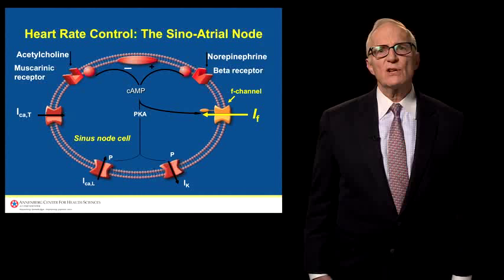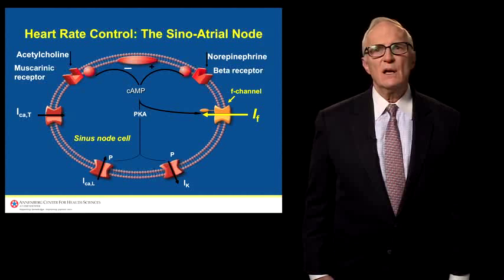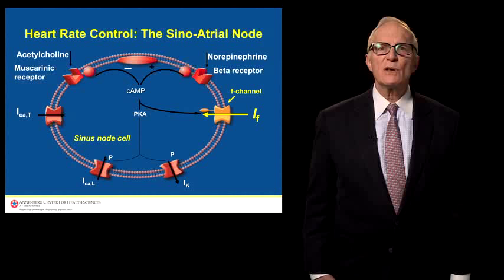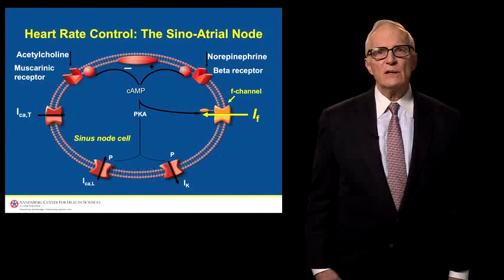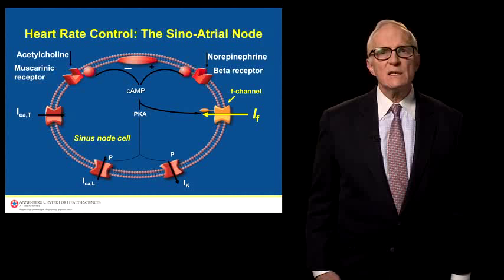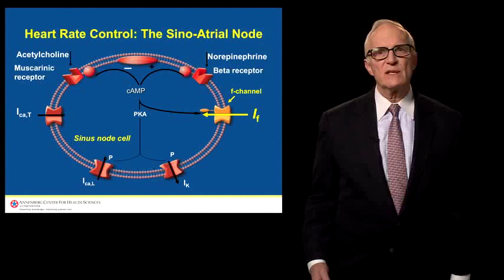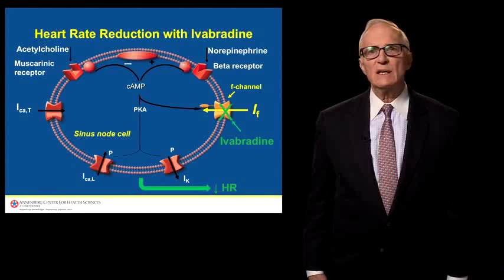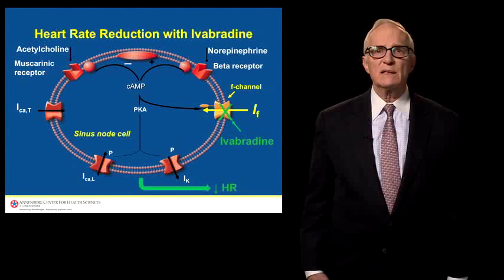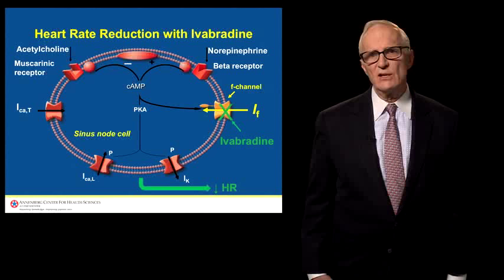However, there's another channel — a hyperpolarization activated cyclic nucleotide gated channel, sometimes called the F channel — which allows both sodium and potassium to move in and out. The current developed by this movement is rather small. However, when it does develop, the F current is a very important current because it modulates the rate of spontaneous diastolic depolarization. As the F current is decreased and depressed, spontaneous diastolic depolarization occurs less rapidly. The slope of diastolic depolarization is decreased, and the result is that the heart rate is decreased as well.